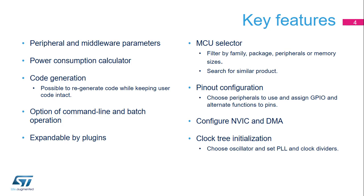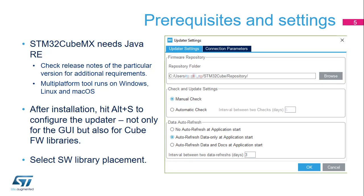The project initialization code can be generated and potentially regenerated while keeping the user code intact. Download the STM32CubeMX installer for free from the ST website and install it. Then set your preferences in the settings menu: one menu for the updater and library download (Alt+S), and the other for code generation and integration with development tool chains (Alt+P). Once this setup is completed, a new project can be created.